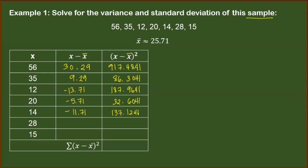For the second to last item: 28 minus 25.71 gives us 2.29. Squaring that value, we have 5.2441. And finally, for the last row: 15 minus 25.71 is negative 10.71. Squaring this number, we have 114.7041. To complete the table, we add all the entries in the third column, and we should arrive with a sum of 1,481.4287.